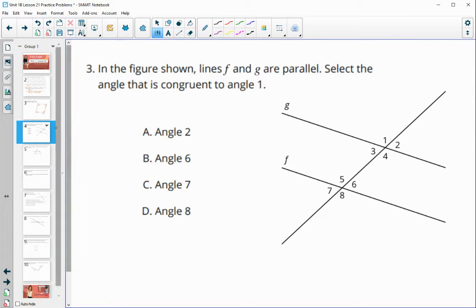Number three in the figure shown lines F and G are parallel. So let's all select the angle that is congruent to angle one. So here's angle one. So they want us to select whichever one is equal to angle one. So is angle two equal to angle one? No, they add up to 180.